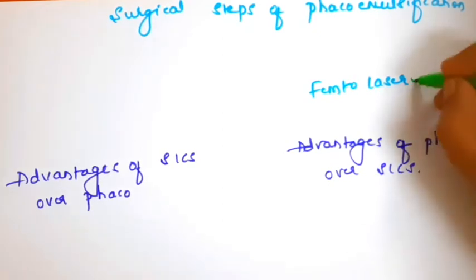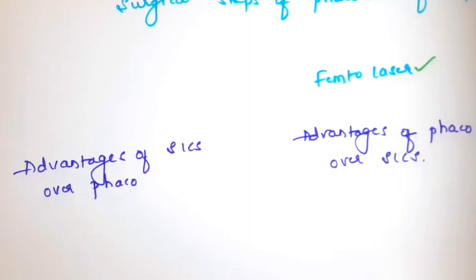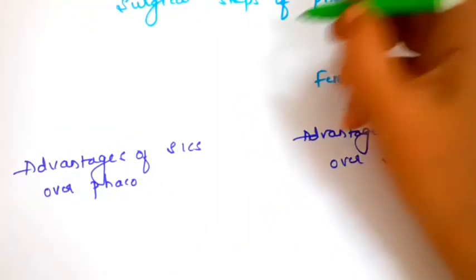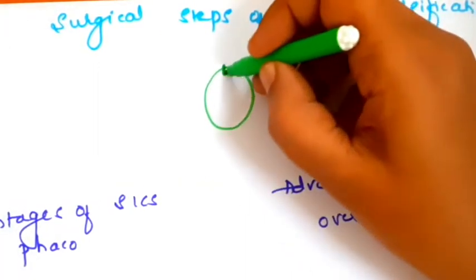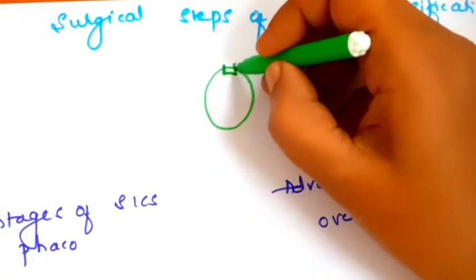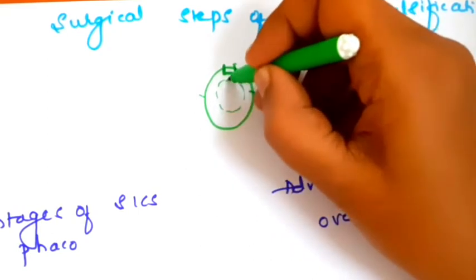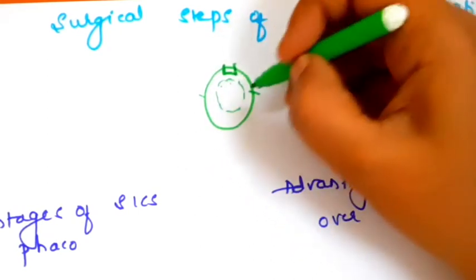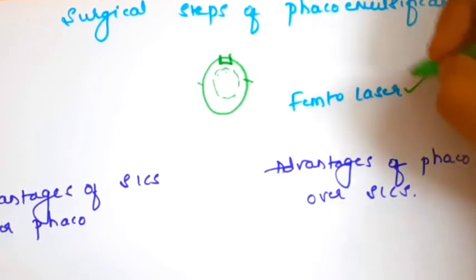In phacoemulsification, you can also use laser energy — FEMTOSECOND laser — which helps in some steps of the surgery, like making a plane of dissection, the main incision, the side ports, and even the capsulorhexis. After these laser-assisted steps, you proceed with the phaco surgery as usual. That is the use of femtosecond laser in phacoemulsification.